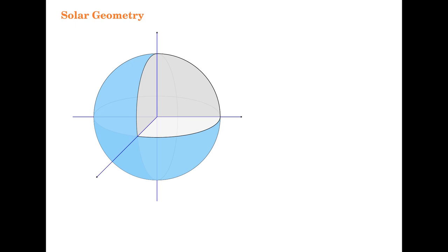Let us now consider the solar geometry using a 2D graphic system — I am using Inkscape for 2D graphics. The 3D visualization we just had will help you visualize the entire solar geometry in a 2D graphics-based system. We have these three axes as shown: the vertical axis is called P, the polar axis, and the earth is rotating about the polar axis.